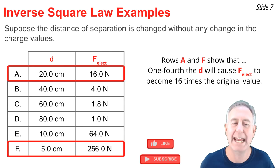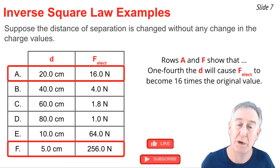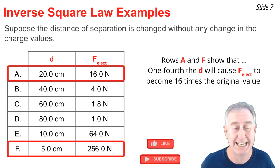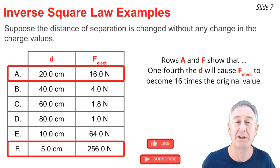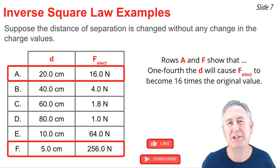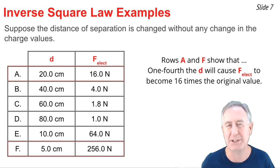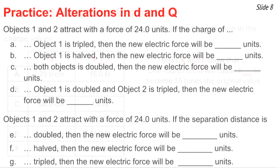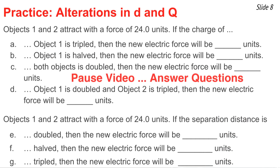Row A and F show that if you were to make the distance one-fourth the original value — it was 20, and now it's 5 centimeters — then you make the force 16 times larger. It was 16 newtons, and it's now 256 newtons. Now it's your turn to practice, so pause the video and give these seven questions some time. When you're ready to learn the answers and their explanations, press play.